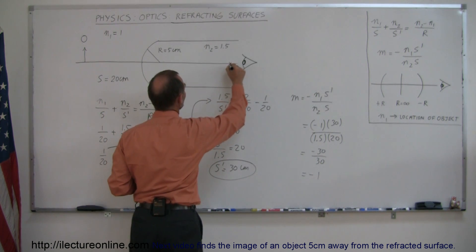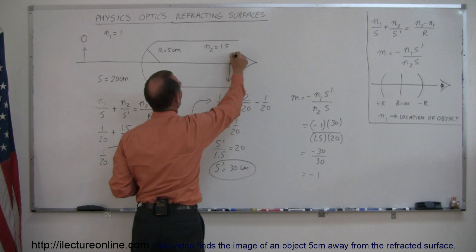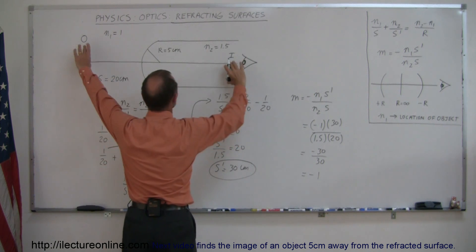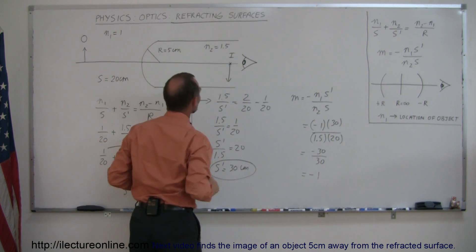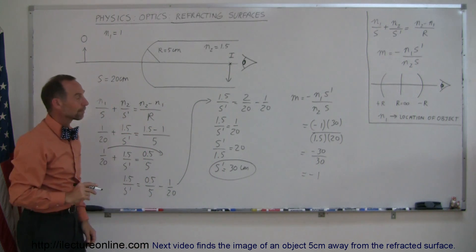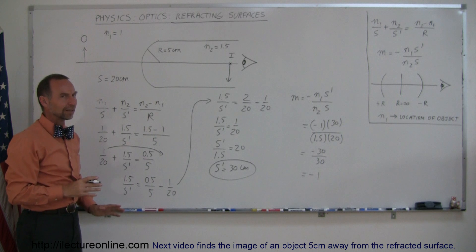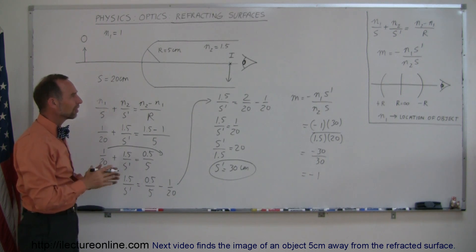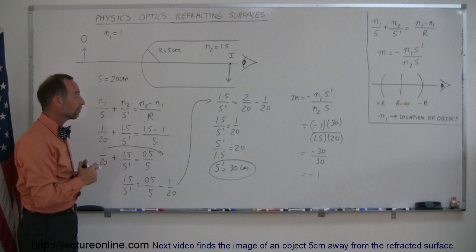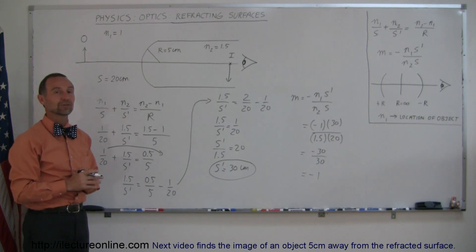Okay, that means that the image is inverted, and it's the same size as the object. So we have an image that looks like this, and it's the same size as the object, and it's 30 centimeters behind the boundary. And that's how we find that. Okay, so you can see with refracting surfaces, there's all kinds of different things that can happen, and we'll show you some more examples until you feel comfortable with refracting surfaces.